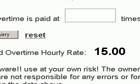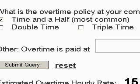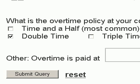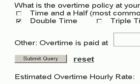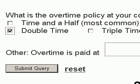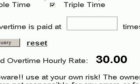That is basically how the overtime calculator works. If we go up and click on double time, you need to check double time and uncheck any other box — you can only have one box checked. Click Submit again, and now our estimated hourly rate is $20 an hour. Uncheck that, check triple time, and click Submit. Now we're at $30 an hour.